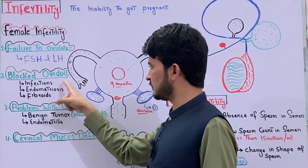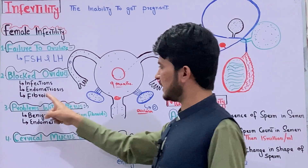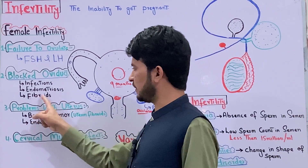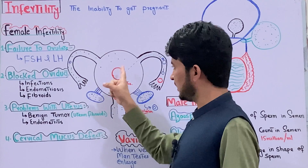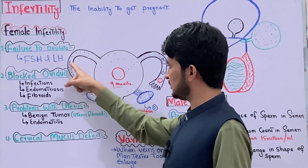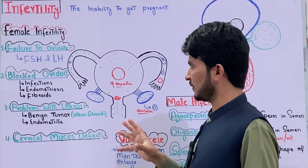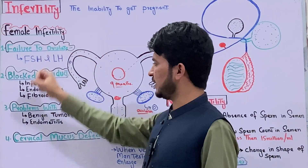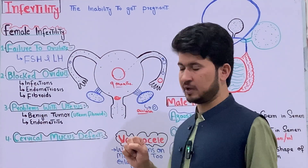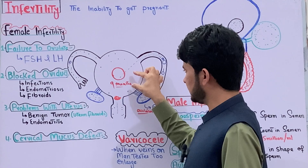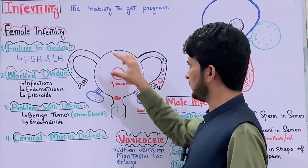The third cause is fibroids. Fibroids means benign tumors. If there are problems with the uterus — such as a benign tumor developing within it — this can cause female infertility.